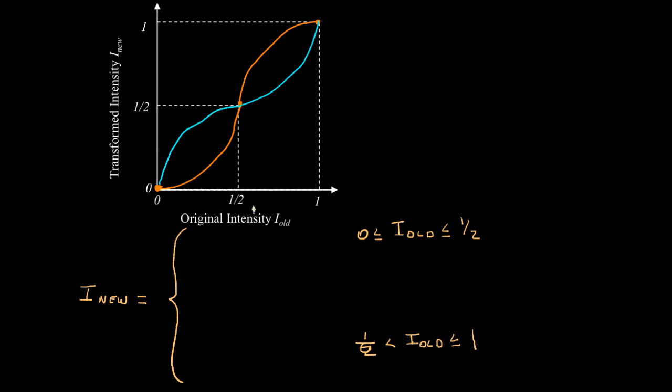Now, let me write the expression that I'm going to use over this interval. I want to use a power law expression. I thought that would be a simple one. So we're going to take the old intensity, scale it by a factor of 1/2, raise it to some power alpha, and then multiply the result by 1/2.